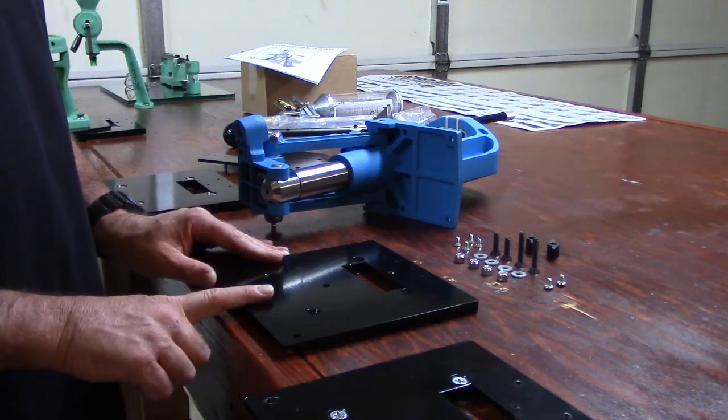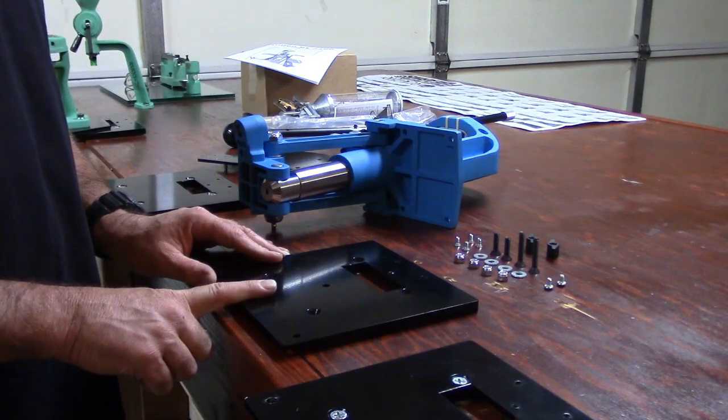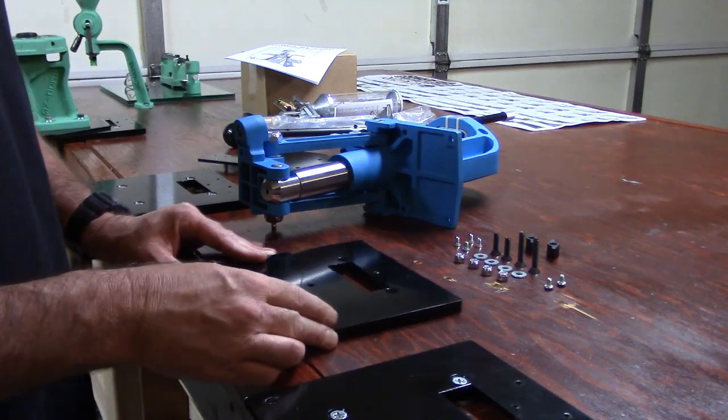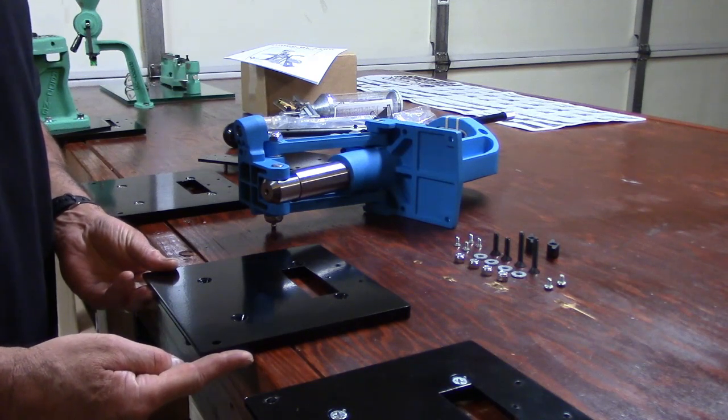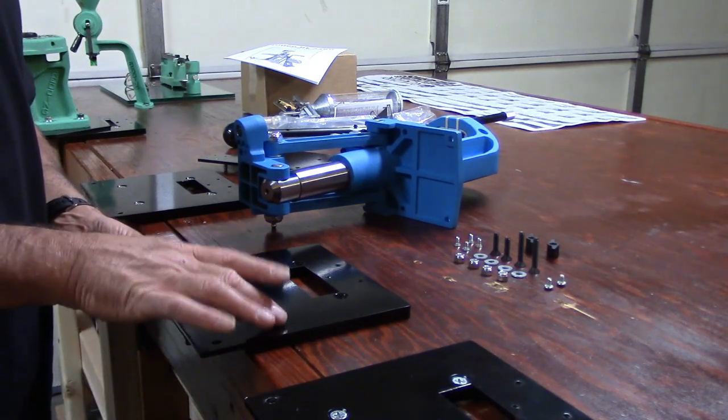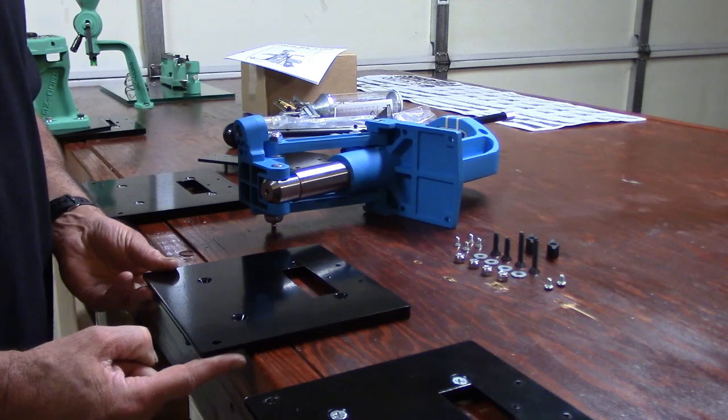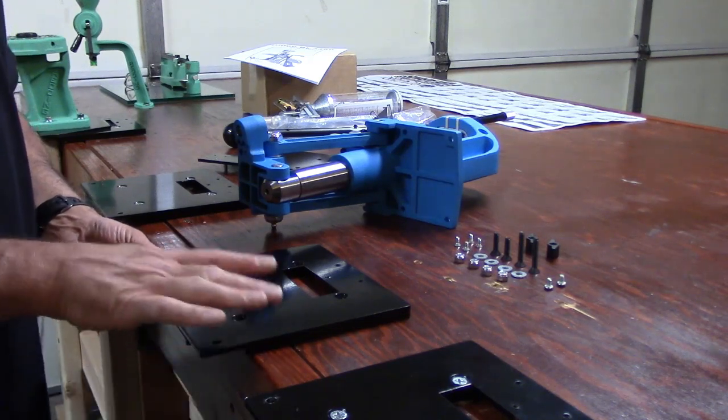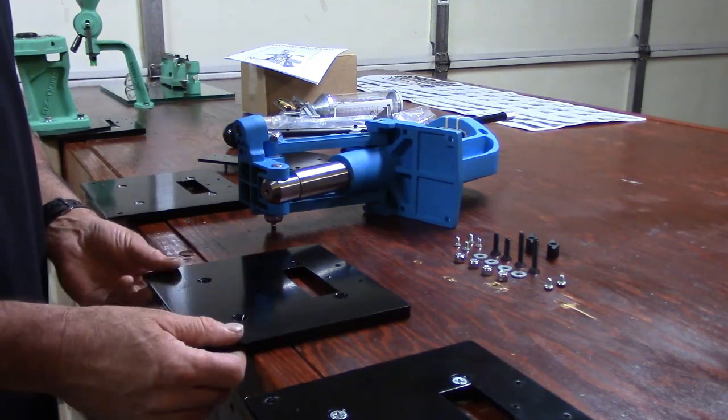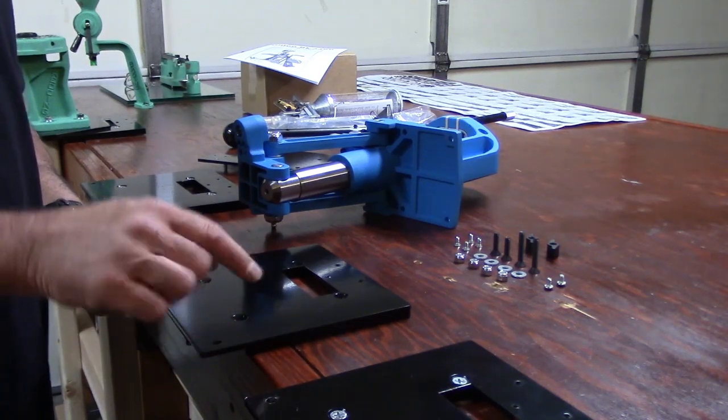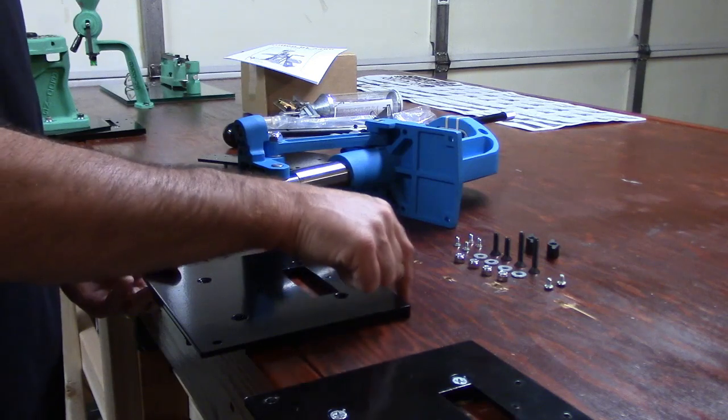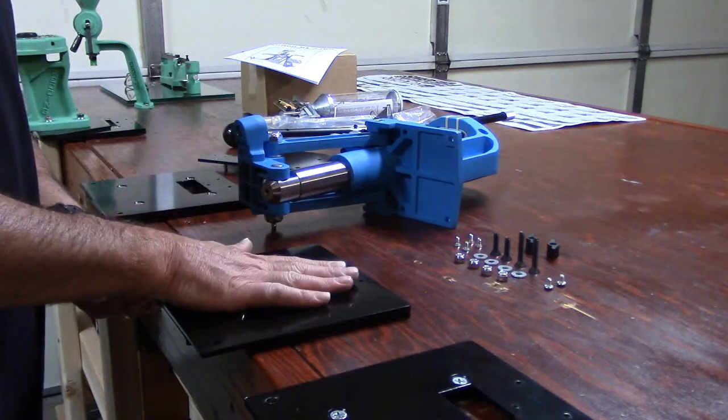This is called the flush mount quick change plate because these plates are designed to hang over the edge of the bench. Follow along when I install this, I'll show you the distance on that. But this is designed so that once you have the base plate where you want it, then you can simply route that area below the plate.